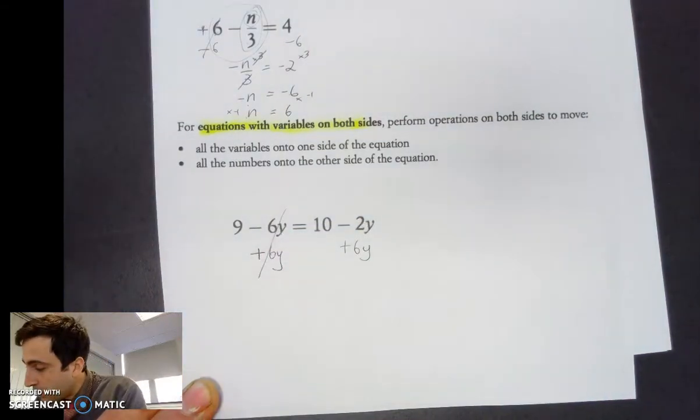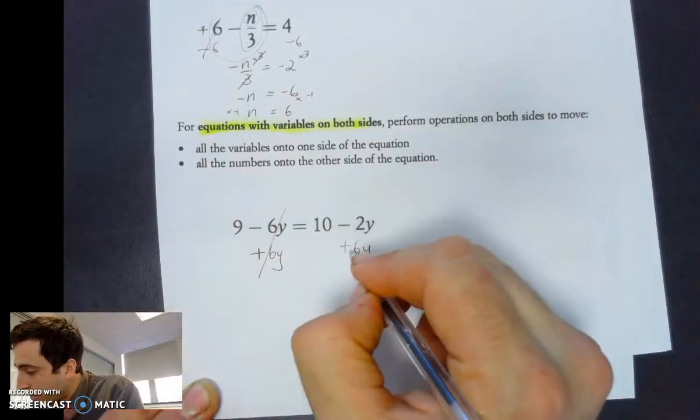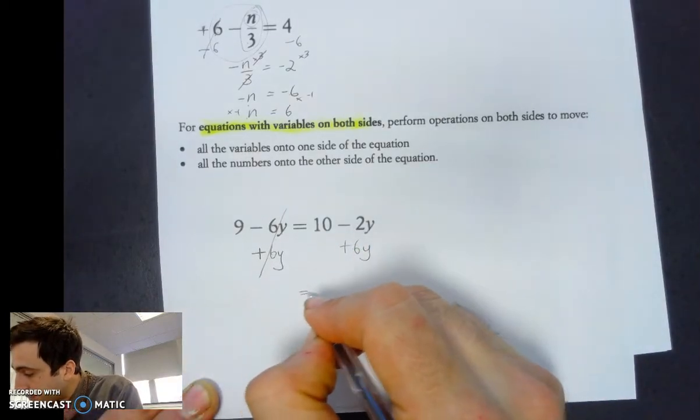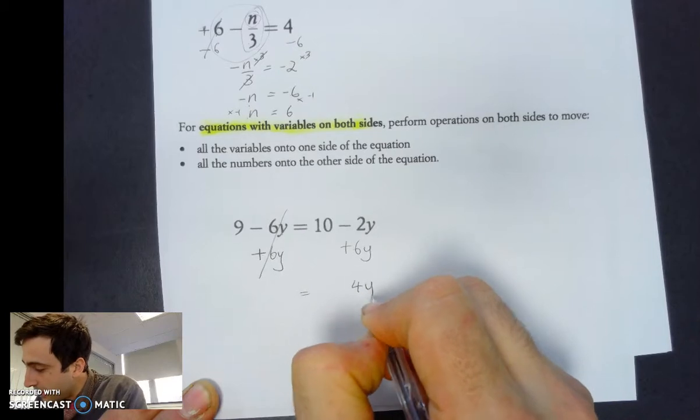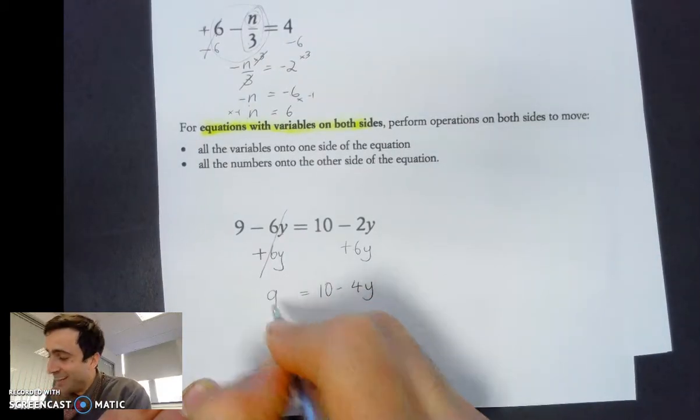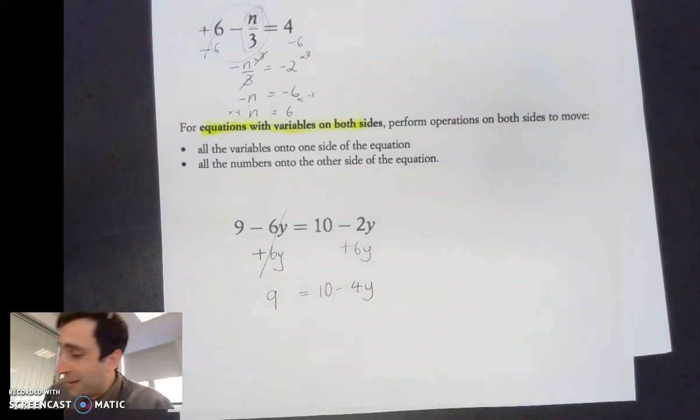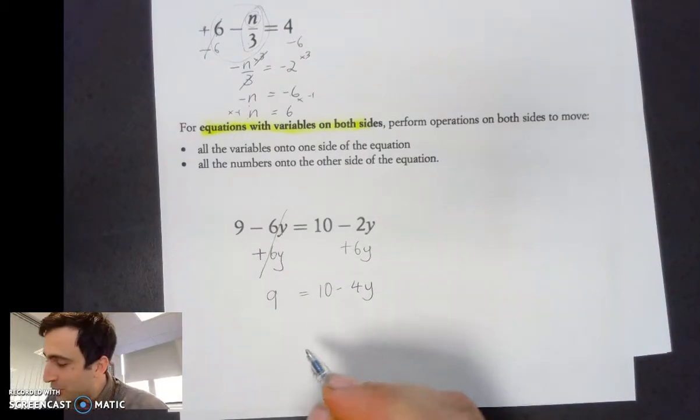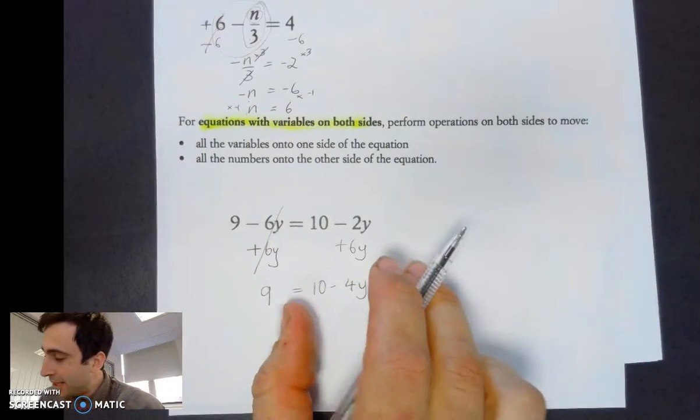But minus 2y plus 6y equals 4y. So what we have is 10 minus 4y. 9 equals 10. Sorry for that. What we've got is 9 equals 10 minus 4y, as we established.